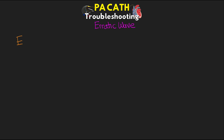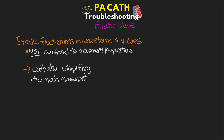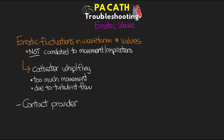The next troubleshooting scenario is if you notice that your patient has an erratic waveform with highly variable pressure, especially if not correlated with movement or respirations. This is probably the result of catheter whip or catheter fling, where the catheter is moving too much in the blood vessel, typically caused by a turbulent area of flow where the catheter is sitting. Contact the provider and let them know — they may need to adjust the position to get it away from that area of turbulent flow.